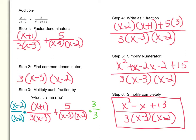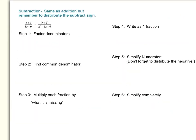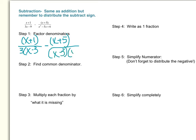Now let's look at an example of subtraction. The rules for subtracting rational expressions are the same as addition, but remember you're subtracting, so there is a negative sign to distribute. This example is very similar to our last one, which makes factoring easy. For step one, we factor the denominators. The numerator does not need to be factored. The denominator three x minus nine factors to three times x minus three. We are subtracting the numerator x plus five divided by x squared minus five x plus six, which factors as x minus three times x minus two.